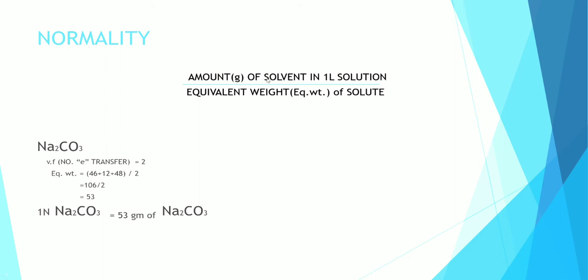Normality: the amount of solvent in one liter solution divided by equivalent weight of solute. How to define equivalent weight? Molecular mass divided by number of electrons transferred or disposed or displaced. Example: Na2CO3, valence factor is 2. That is 2 Na+ plus CO3^2-.